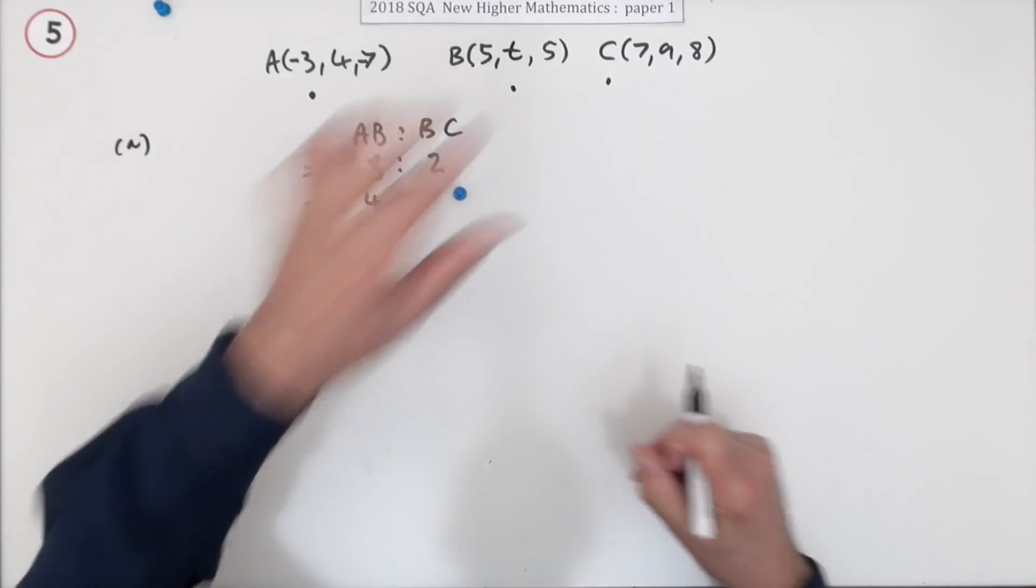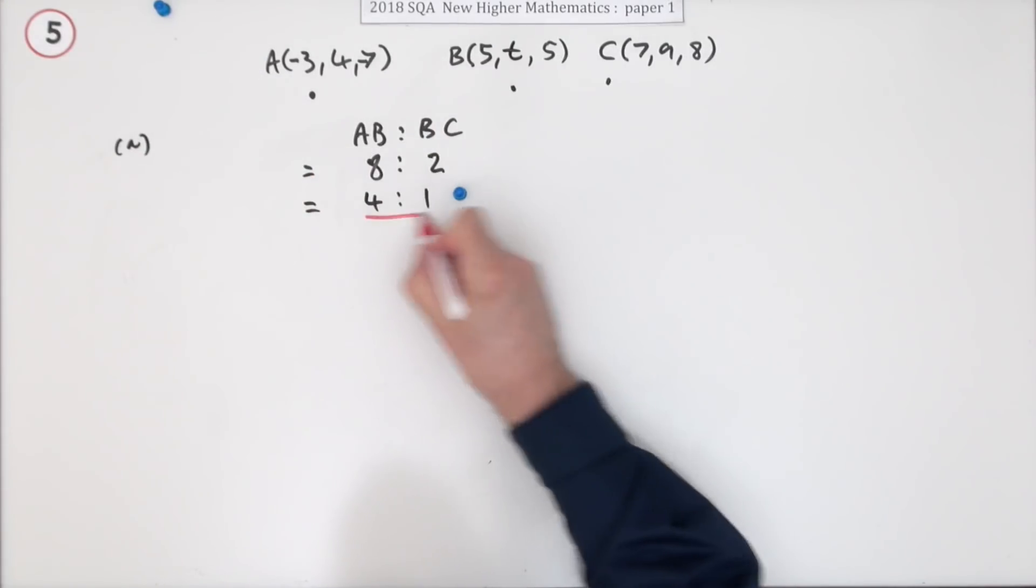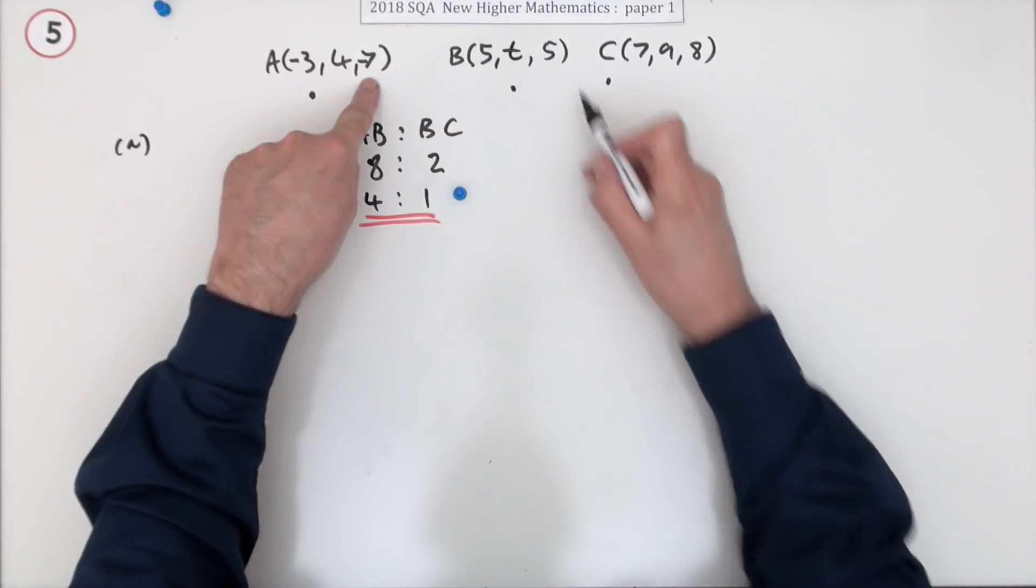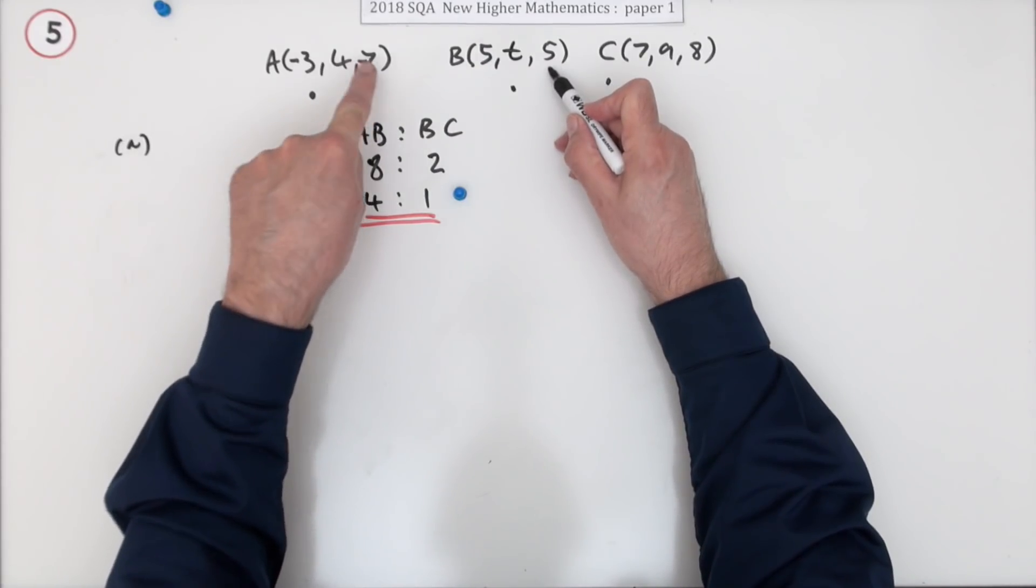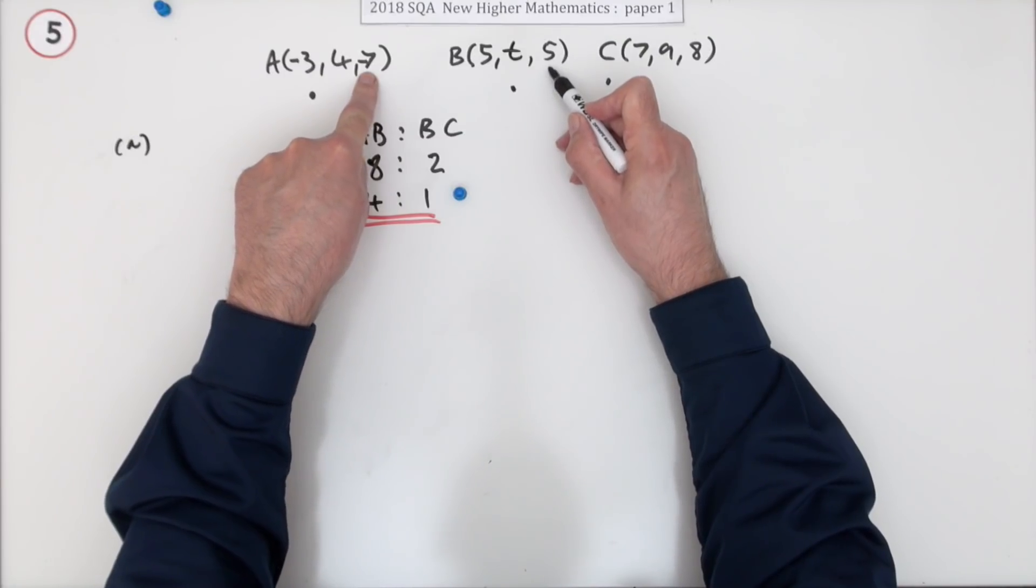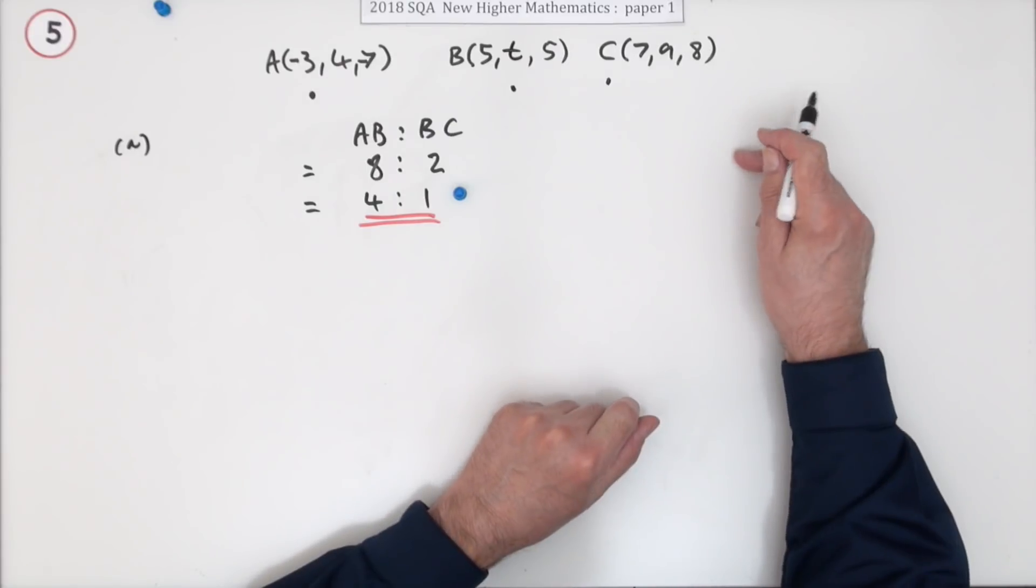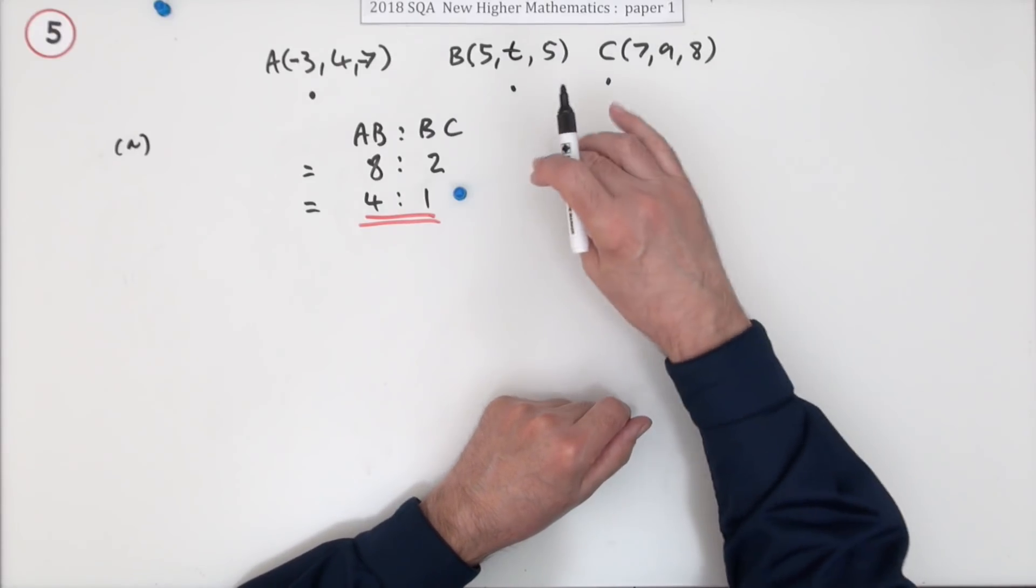If you've chosen the z components instead, negative seven to five is twelve forward, five to eight is three, and twelve to three is still four to one.